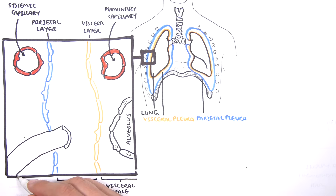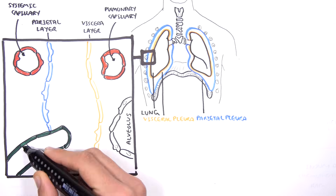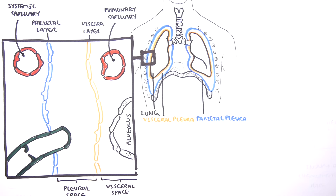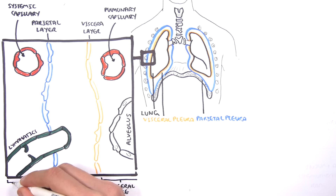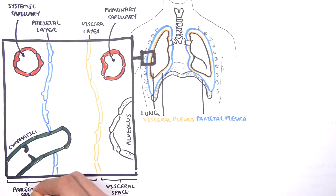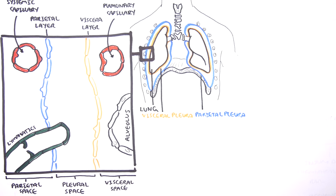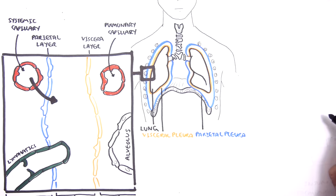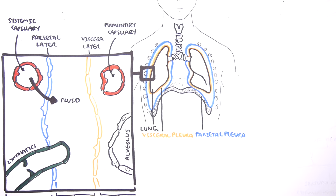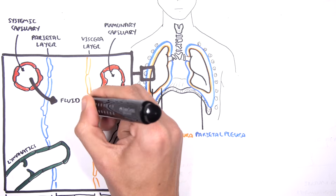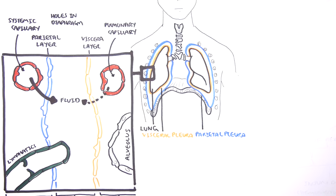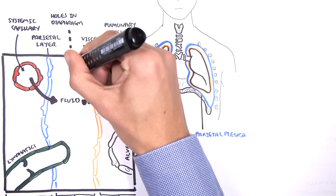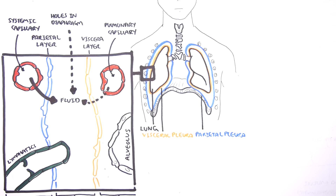In the parietal space, you also find lymph vessels, which drain the pleural fluid from the pleural space. The pleural fluid comes from three main sources. The main source being the systemic capillaries. Then you also have fluid that can enter from the pulmonary capillaries, and also from the abdomen, where fluid can come in through small tiny holes in the diaphragm.